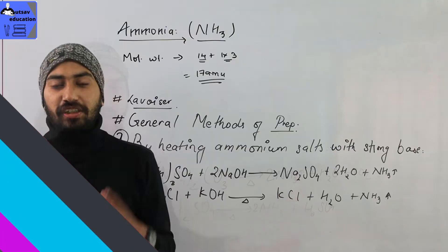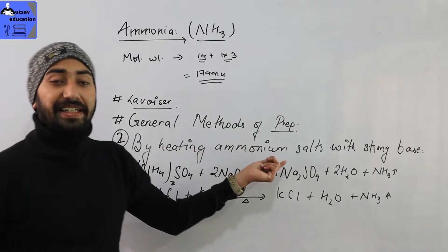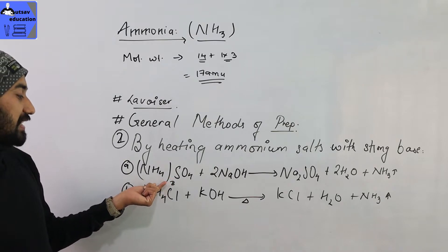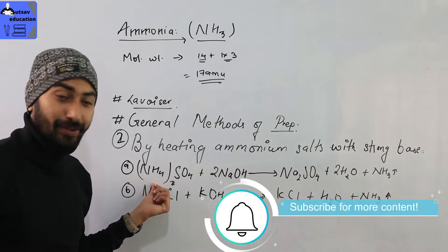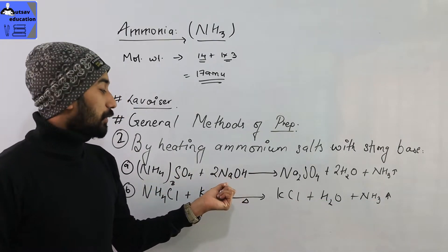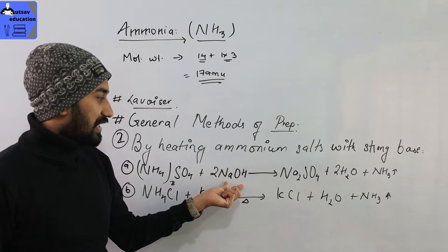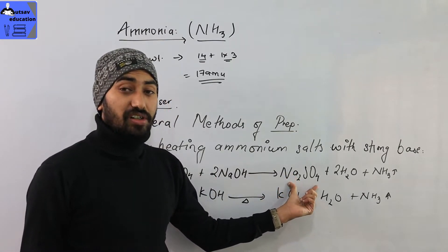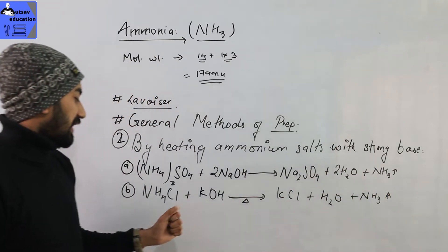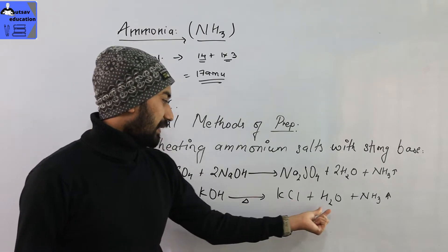The second general method is heating ammonium salt with a strong base. Example: ammonium sulfate plus sodium hydroxide gives sodium sulfate plus water plus ammonia. Another reaction: ammonium chloride plus potassium hydroxide gives potassium chloride plus water plus ammonia.